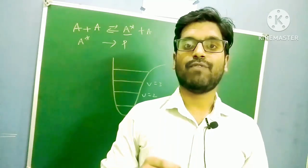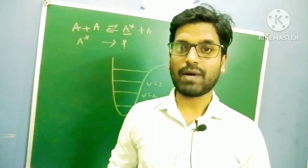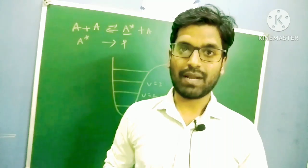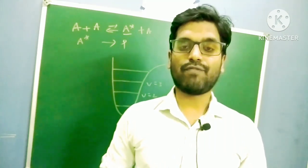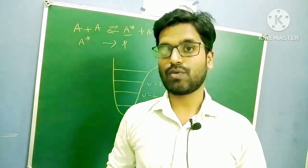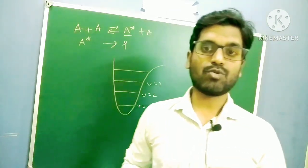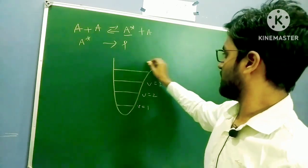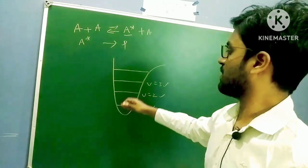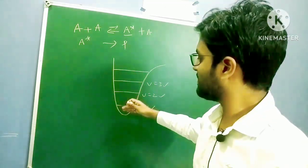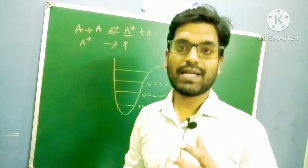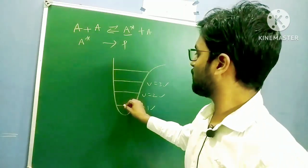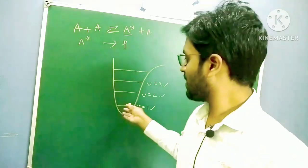Whenever you have a diatomic molecule, every diatomic molecule has only one vibrational mode. If you use the 3N minus 5 formula, you will also get only one vibrational mode. I've drawn a rough diagram here showing V equal to one, V equal to two, V equal to three surfaces forming. The molecule will excite from one energy level to another energy level.